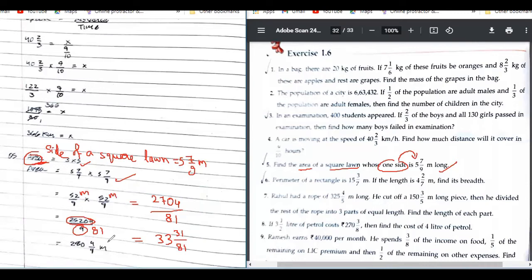...is meter, this is meter. This should be meter square. So your final answer is meter square. And write a final statement: therefore, area of the square lawn is 33 31/81 meter square.